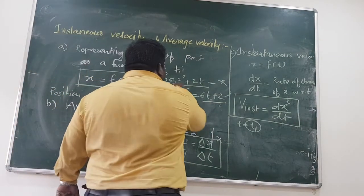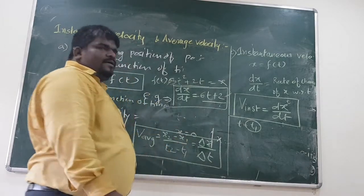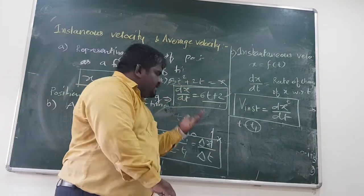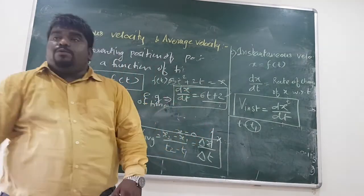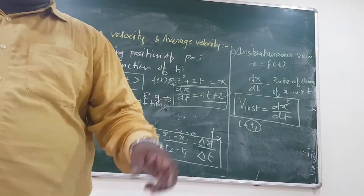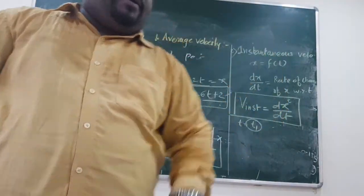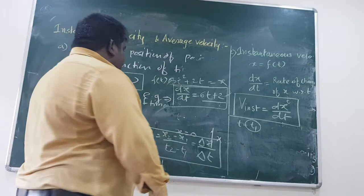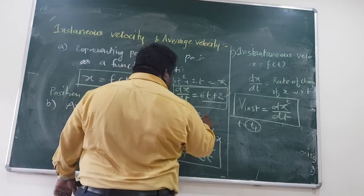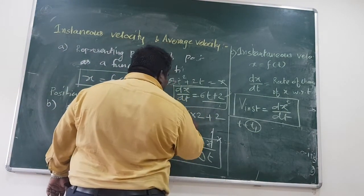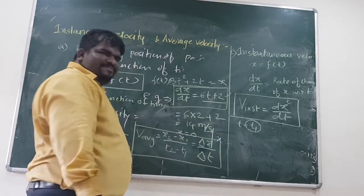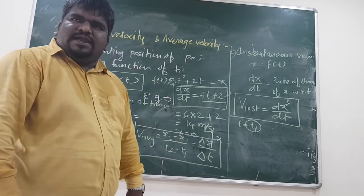So this is the general expression for instantaneous velocity. My question is: give me the instantaneous velocity when t equals 2 seconds. Then the answer is 6 into 2 plus 2, which is 14 — so 14 meters per second.